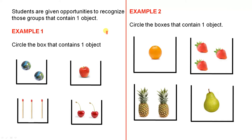Students are given opportunities to recognize those groups that contain one object. This is just a basic example here, just to give you an idea of what I mean. Again, circle the box that contains one object. So the students would very carefully look at each box, and I'm sure they would circle this one.